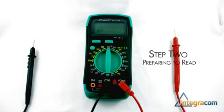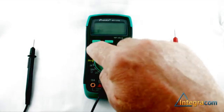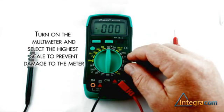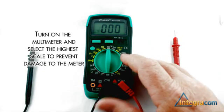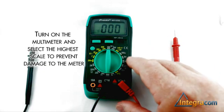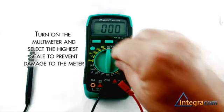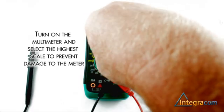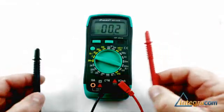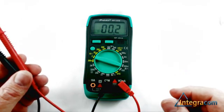This multimeter may also be used to read DC current. Turn on the multimeter and select DC amps. You can then apply the test leads to whatever it is that you want to measure.